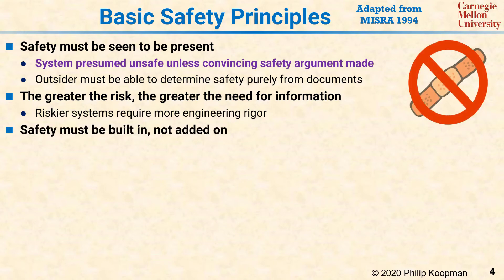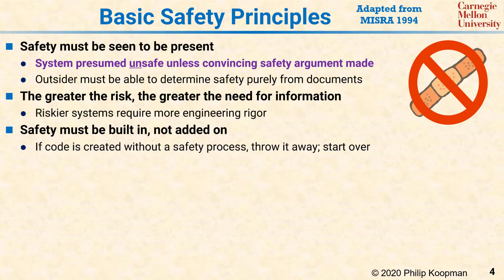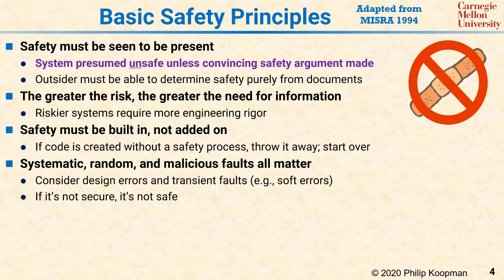Next, safety must be built in rather than added on. Taking an unsafe system and adding layers of safety bandages does not get you a safe system. Generally, if you have some code that was not created in accordance with the safety standard, the only way you can get safety is to throw the code away and start over, but this time actually follow a suitable software safety standard. Systematic, random, and malicious faults all matter. What this means is that you need to consider hardware faults, software bugs, random runtime system upsets, and security attacks when you ensure system safety.